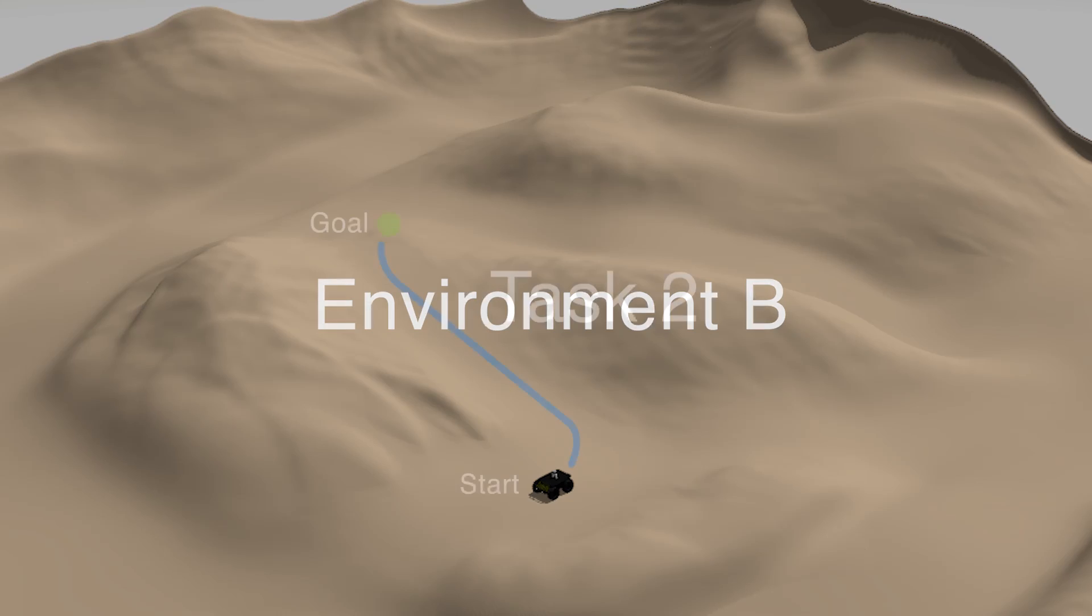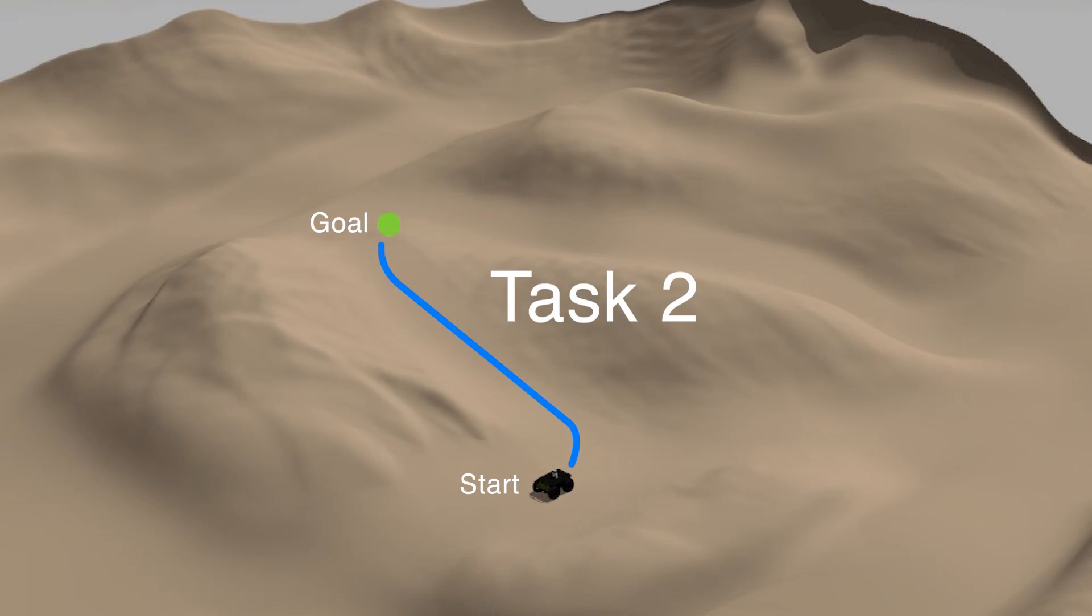In Environment B, Task 2 was tested with PUTIN and our algorithm using ALOM.